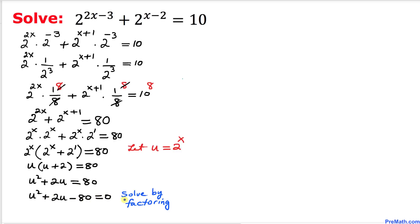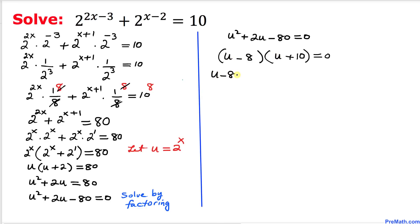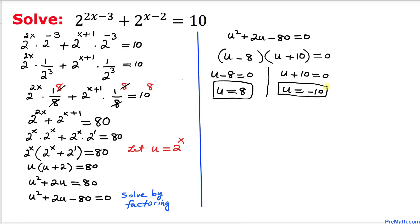We now have a quadratic equation which we'll solve by factoring. Setting up two parentheses equal to zero, we get (u - 8)(u + 10) = 0. Separating the factors: u - 8 = 0 gives u = 8, and u + 10 = 0 gives u = -10.